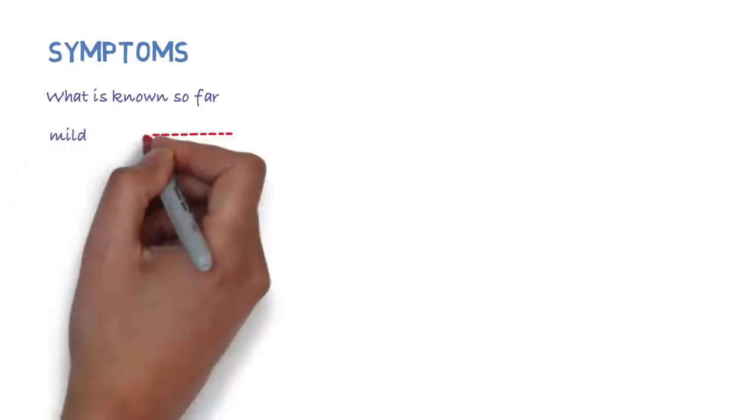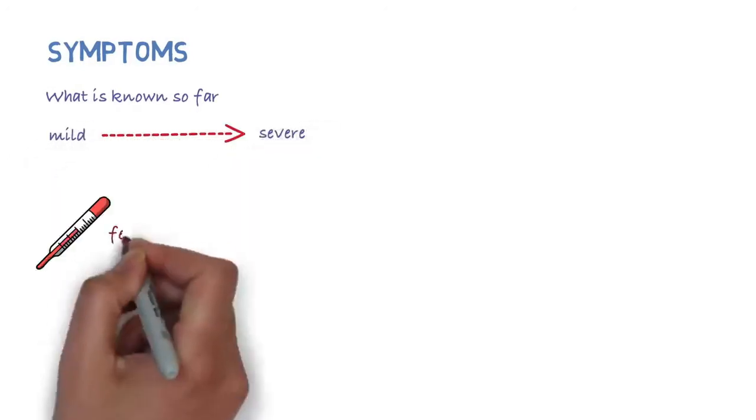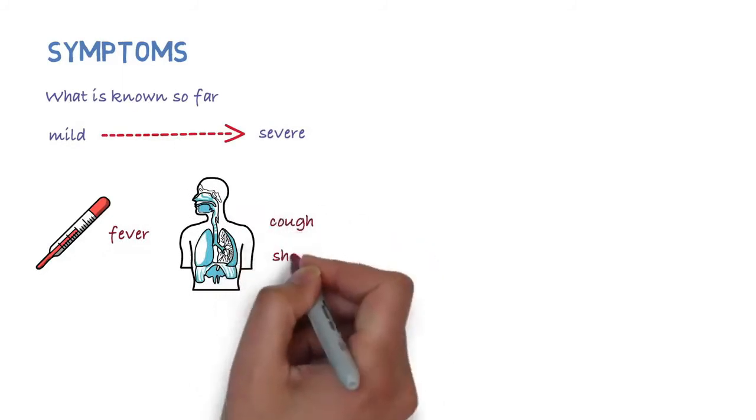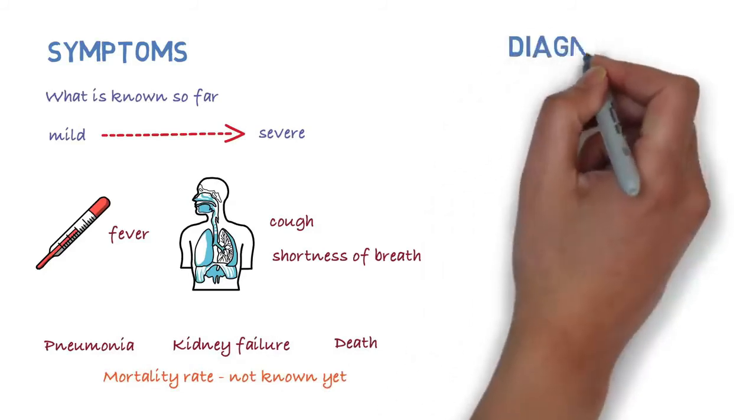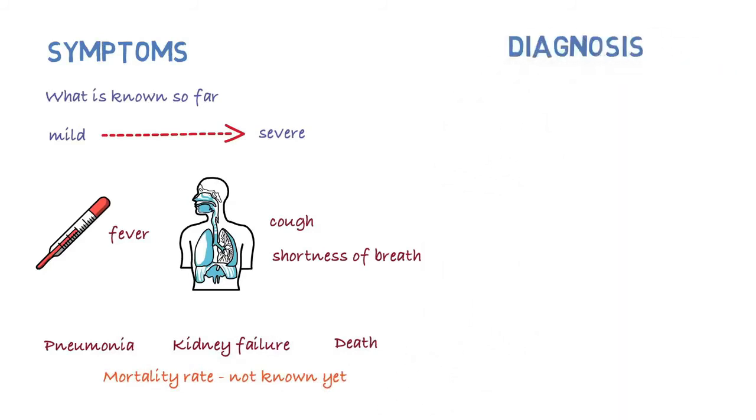So how does the disease present? Well, from what is known so far, there could be a number of symptoms ranging from mild to severe. There can be fever and respiratory symptoms such as cough and shortness of breath. In more severe cases there's been pneumonia, kidney failure, and death. The mortality rate is not known yet.